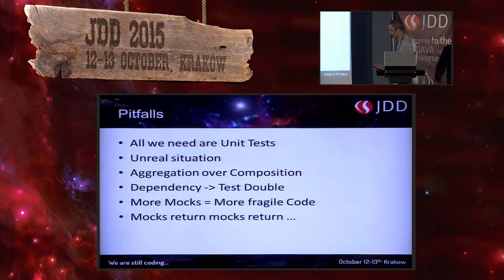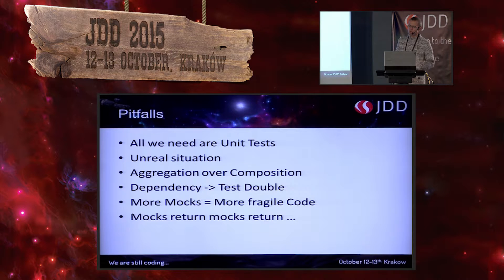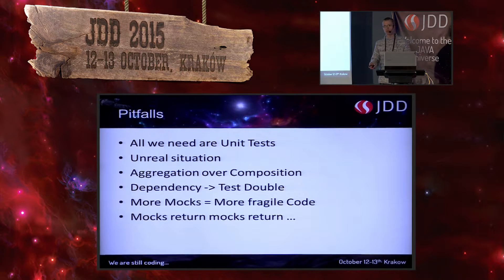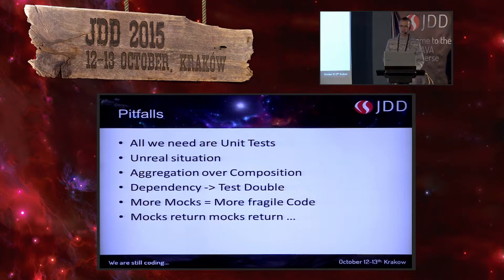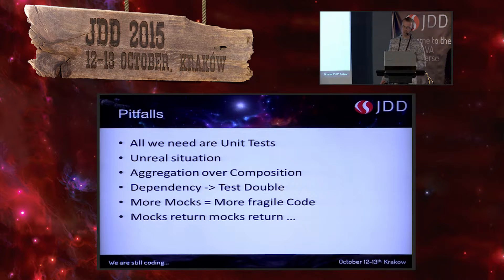So those were our types of test doubles. It's important to know when and how to use them in a particular situation. It's good to name those objects with their type — dummy, spy, and so on. Why not? Your test should be descriptive. Don't hide that this is a spy object if it's a spy object.